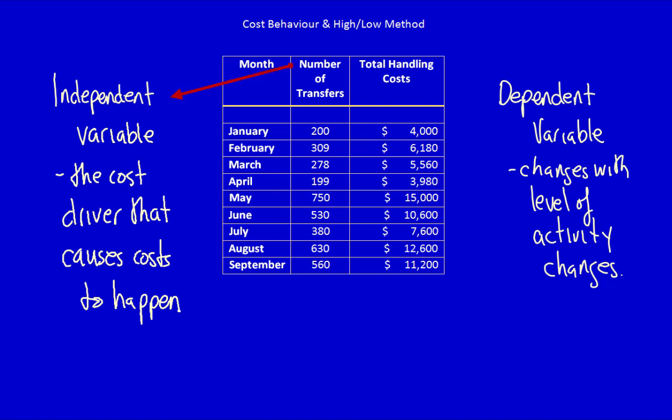Therefore, the number of transfers is the independent variable, because as the number of transfers increases, the cost of handling the material increases. Therefore, the number of transfers is the independent variable. It is the thing that causes costs to happen. The total handling cost is the dependent variable. It changes with the level of activity.